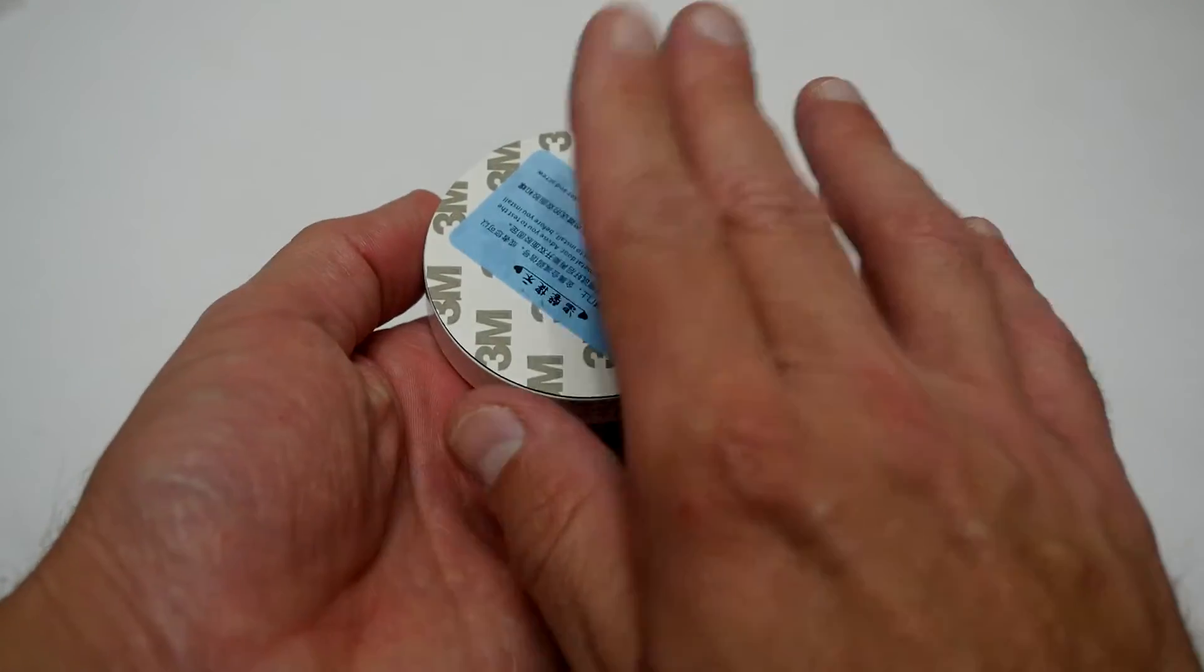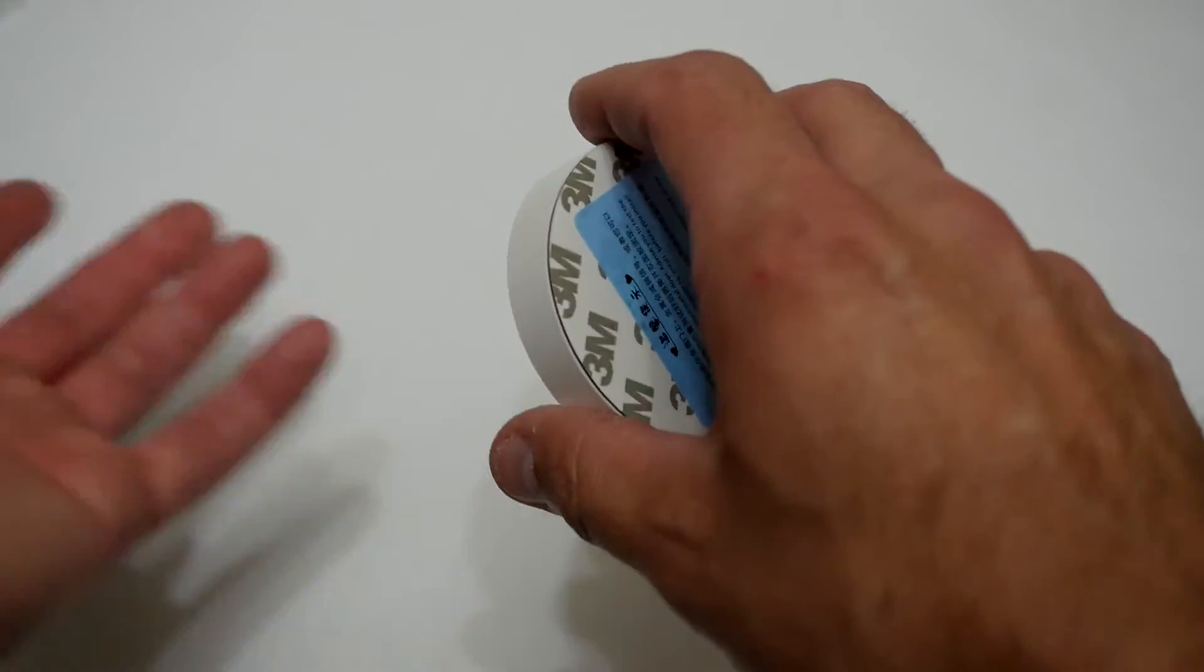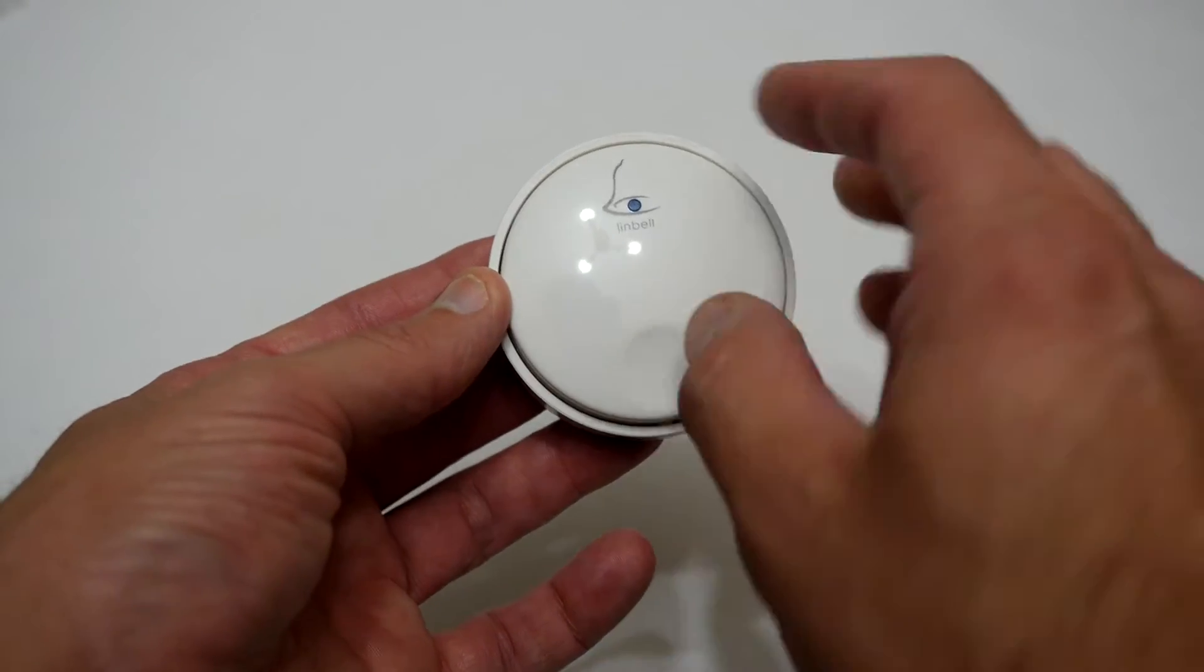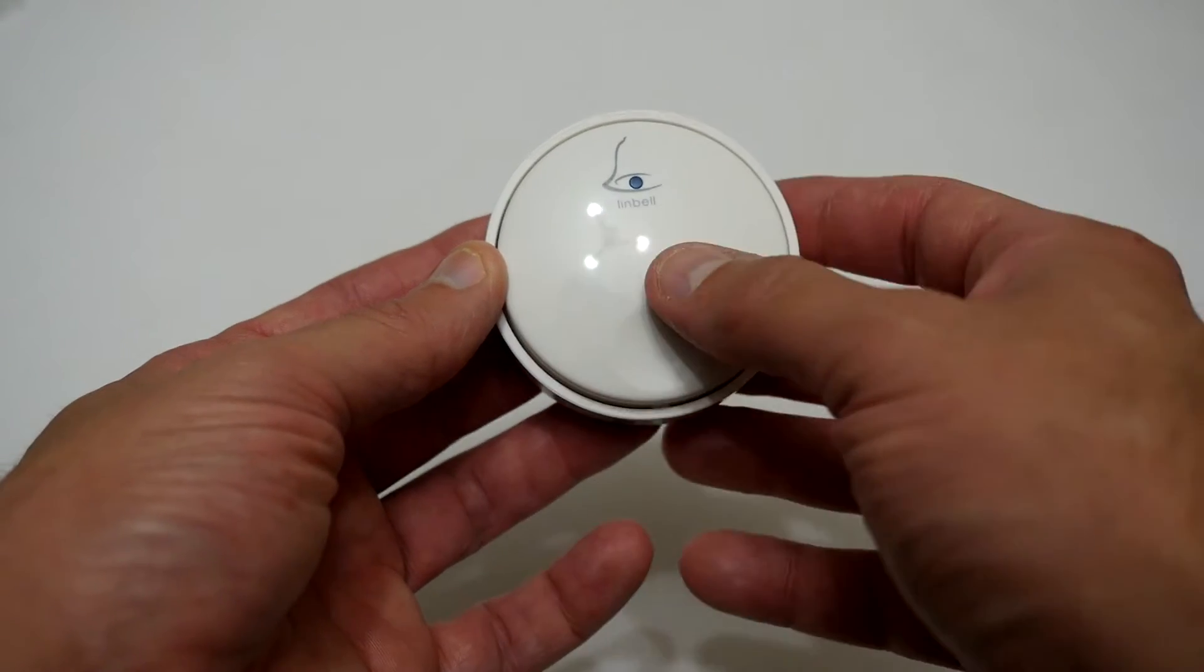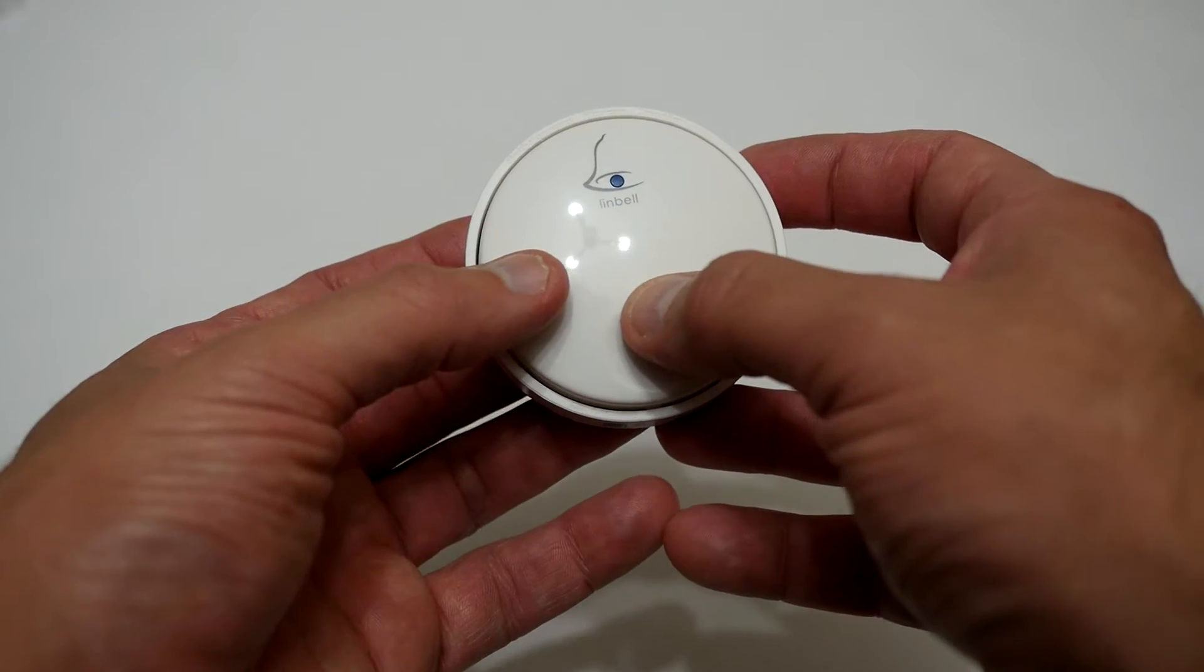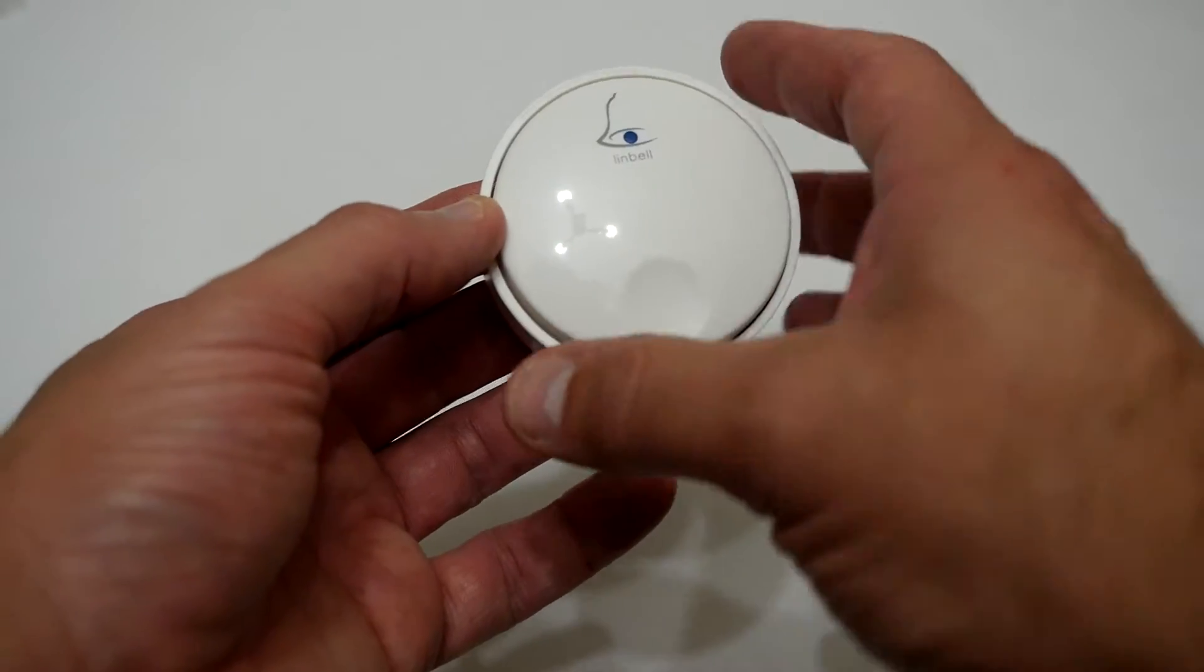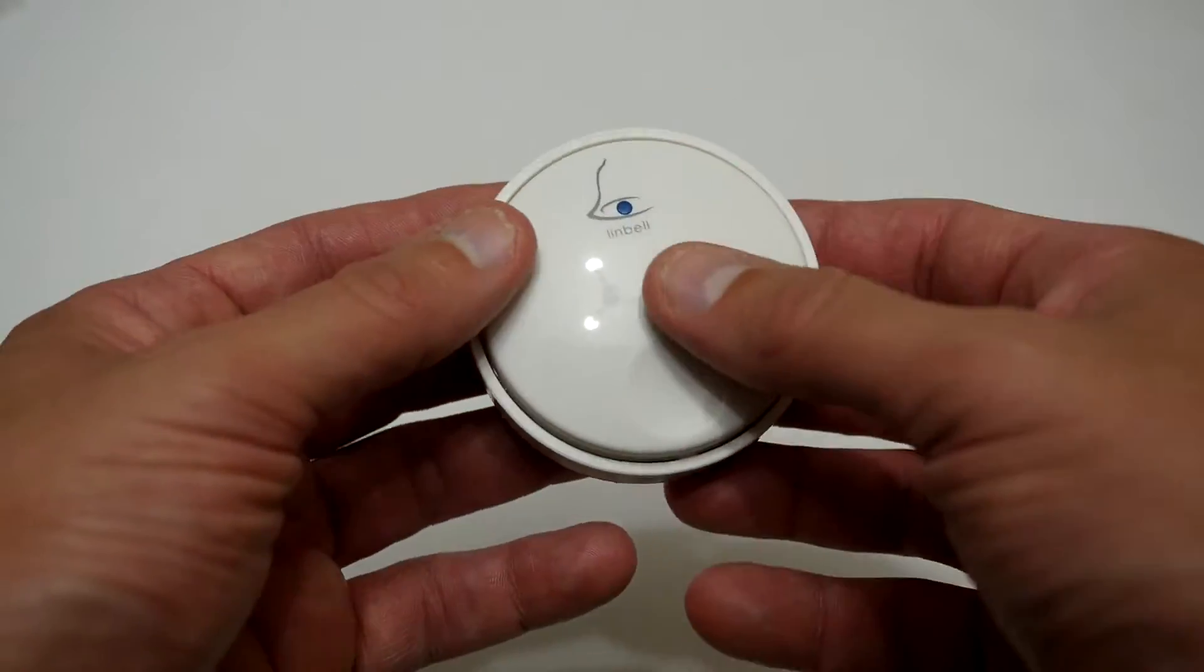Now it's got an adhesive back which will be used to stick to the other part, and basically when you push this you'll see a little blue LED light up and that's now generating power and it works like a little dynamo inside so that when you push it down it generates power and sends the transmission to the receiver.